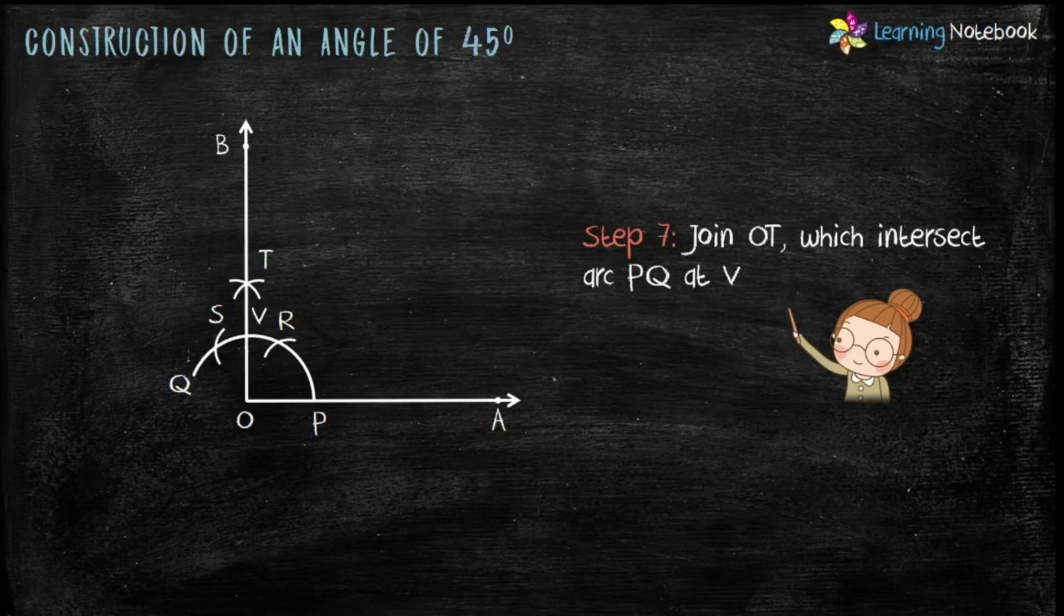Now, in part 1 of this chapter, we learnt how to bisect an angle. So, we will use same concept to bisect this angle of 90 degree to construct an angle of 45 degree. To clearly show you the angle, let me remove some of the points.